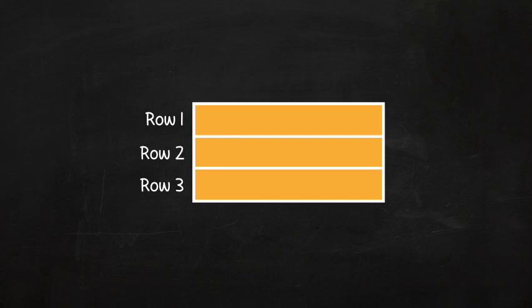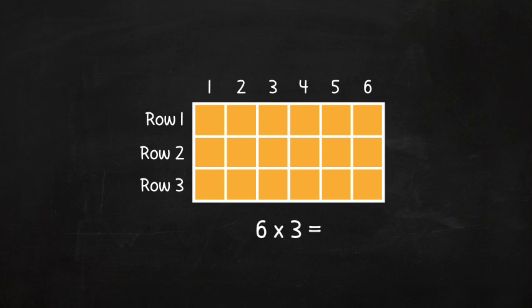Think of it as 3 rows with 6 squares in each. Or, in other words, as 6 times 3, which equals 18.